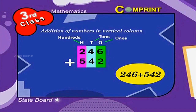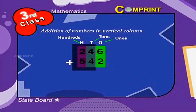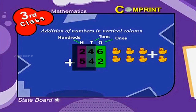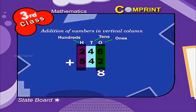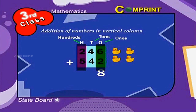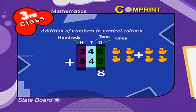Step 2: first, let us add the digits of the ones place. That is, six plus two is equal to eight. Next, we have to add the numbers in the tens place. That is, four plus four is equal to eight.